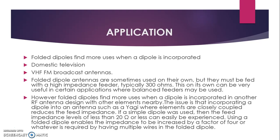Now we will see the application. The folded dipole finds more uses when a dipole is incorporated into other designs. It is used in domestic VHF FM broadcast antennas. Folded dipole antennas are sometimes used on their own with a high-impedance feeder of 300 ohms, which can be very helpful and useful in certain applications where balanced feeders may be required. Having a high-impedance feeder of 300 ohms or more can be very useful in wider day-to-day applications.